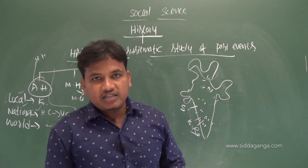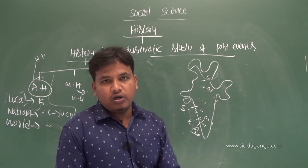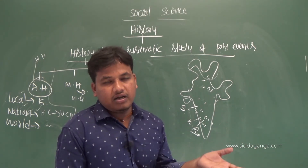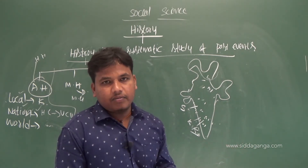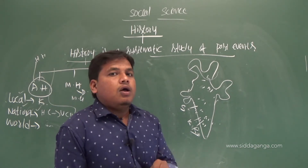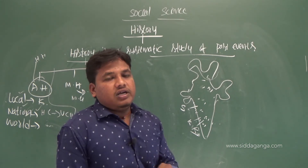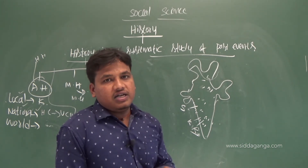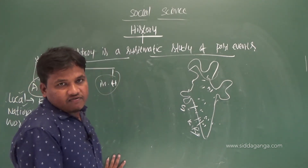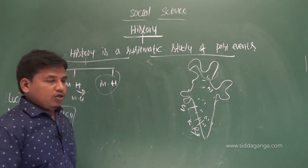There were five dynasties of the Delhi Sultanate: the first is the Slave dynasty, then the Khalji dynasty, the Tughlaq dynasty, the Sayyid dynasty, and the Lodi dynasty. Allauddin Khalji was the famous king of the Khalji dynasty. Muhammad bin Tughlaq was the famous king of the Tughlaq dynasty.